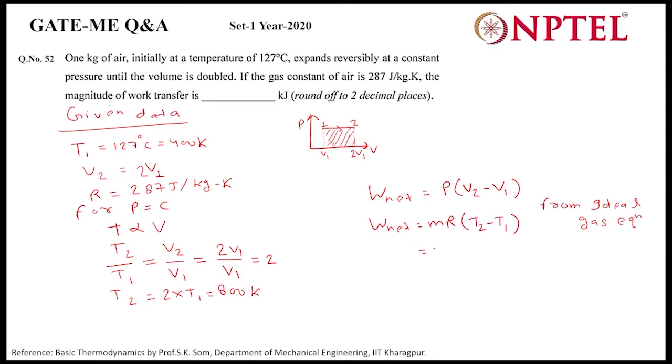And we have here the value for m is 1 kg, already given, and R is 287, and temperature we have T2 as 800 and T1 as 400.